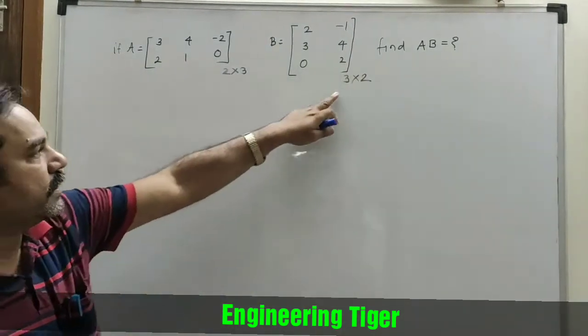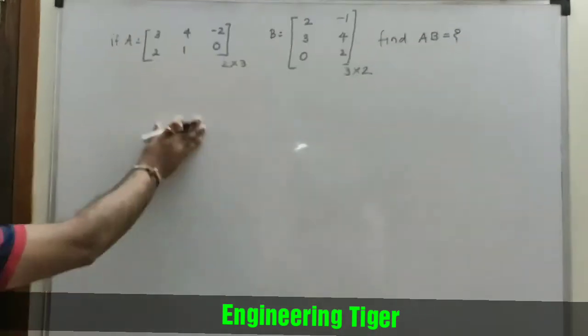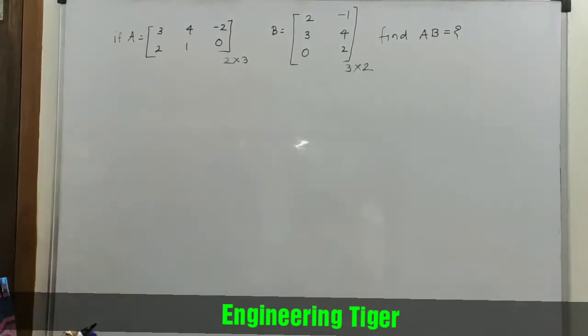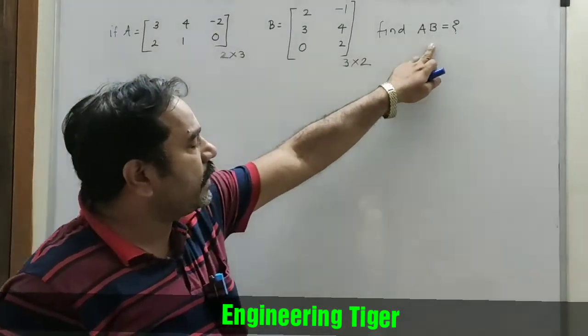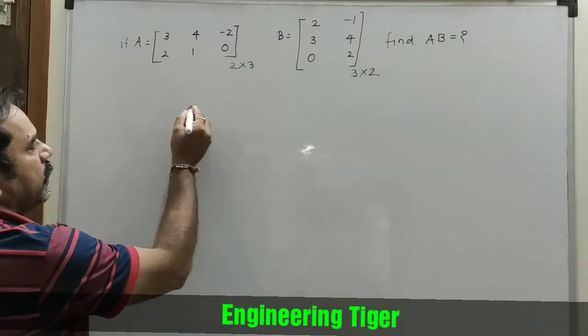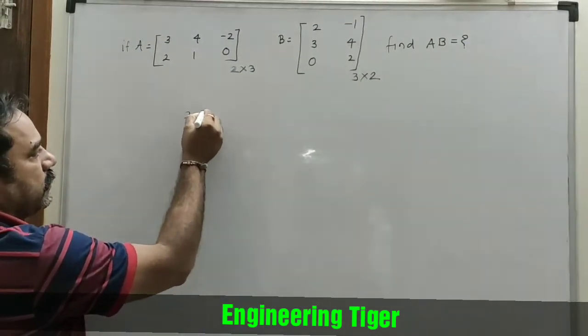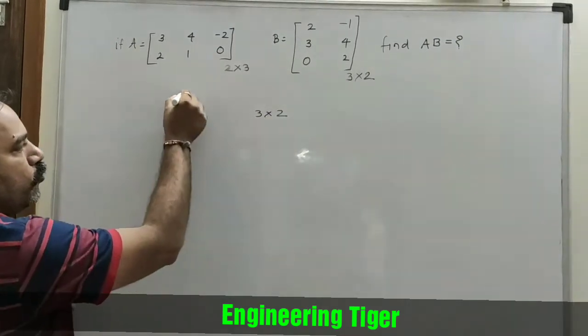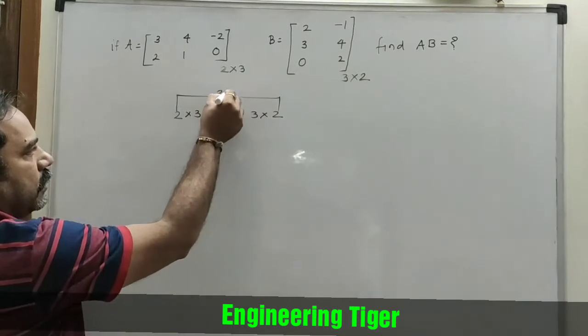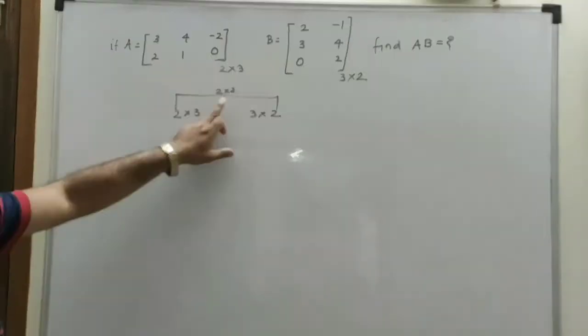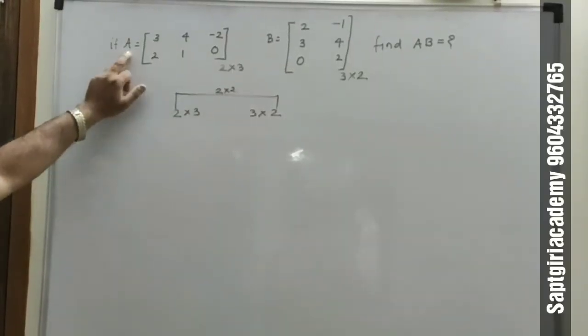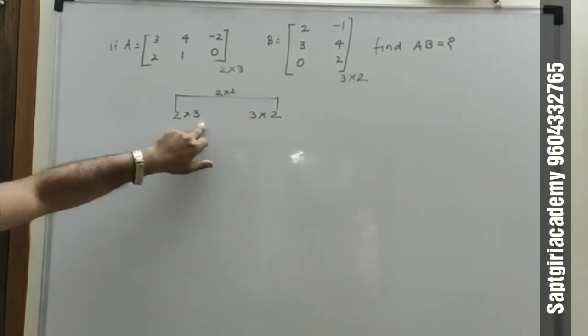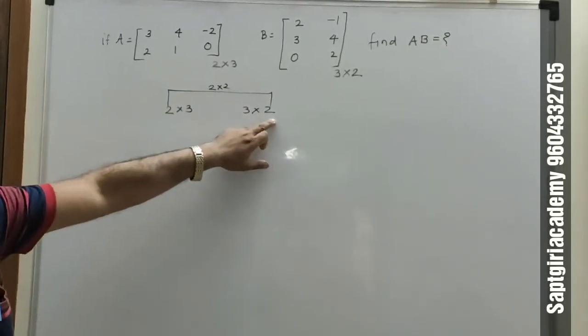The product AB will have the order of 2 by 2. How to find this 2 by 2? The first matrix order is 2 by 3 and second is 3 by 2.